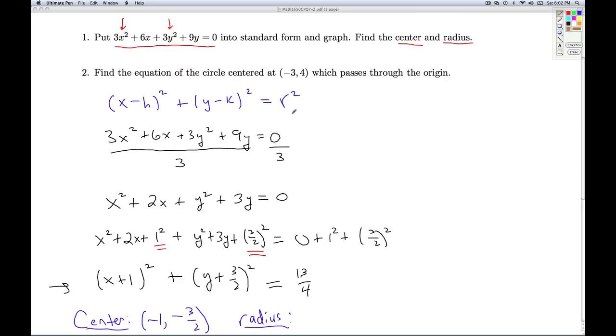And what about the radius? Well, if I look at the standard form, the number over here is the radius squared. So this is the radius squared, which means the radius is the square root of that number. Using properties of radicals, I can write this as √13/√4, which is √13/2.